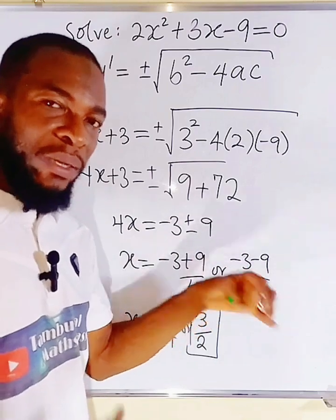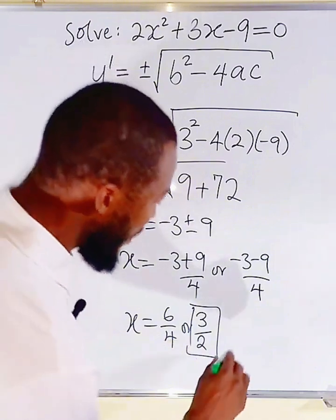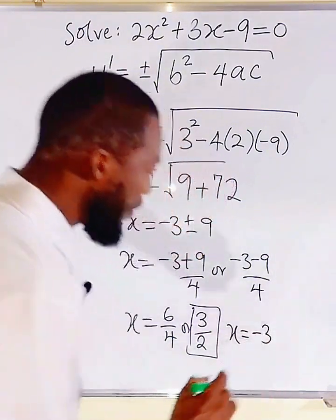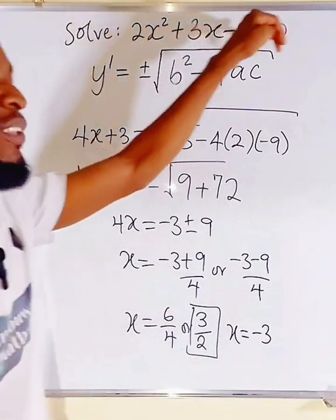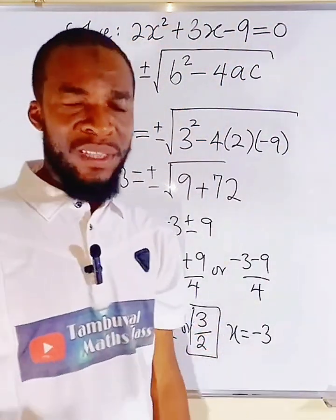And the other one, negative 3, negative 9 is negative 12. Negative 12 divided by 4 is negative 3. So, the other x value is negative 3. So, the roots of this quadratic equation could either be 3 divided by 2 or negative 3.